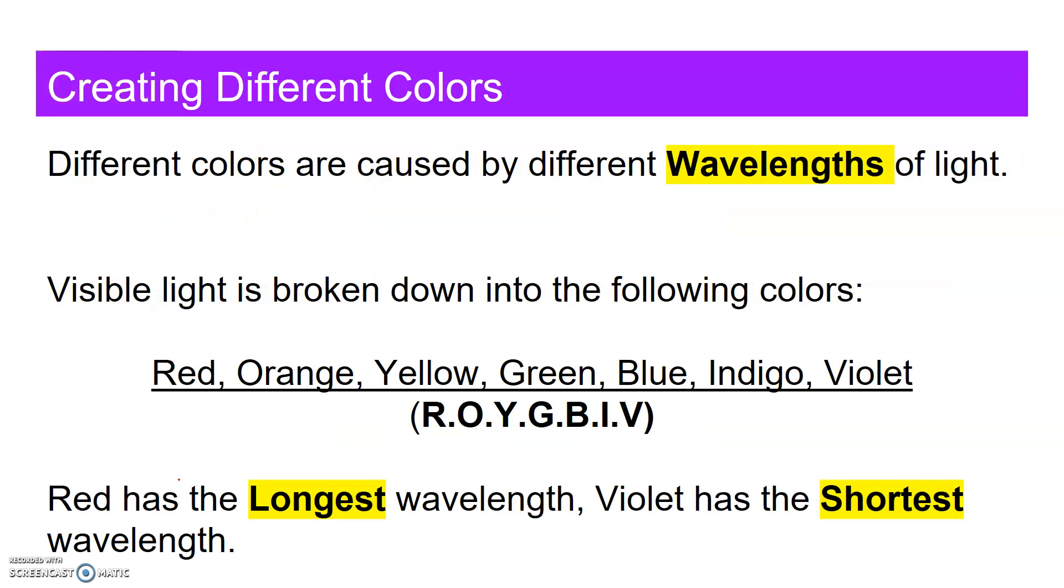So how do we create different colors of light? Well, as I mentioned previously, different colors are caused by different wavelengths of light. The wavelength is the biggest thing.